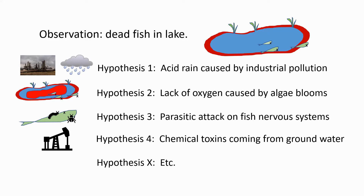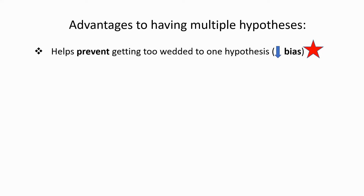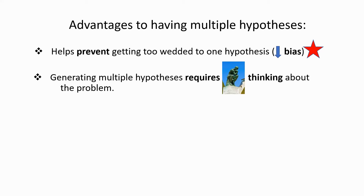There are, of course, many advantages to having multiple hypotheses. Maybe the most obvious one is that it helps prevent becoming too wedded to, too committed to any one hypothesis, and this helps reduce bias towards it. After all, if you have a number of hypotheses, you can take a much more objective point of view towards each one of them. I think it's equally important, however, that the action of generating multiple hypotheses requires you to think quite deeply about the problem, and in so doing you may come to have a better understanding of what the problem is, as well as better ways of testing it.